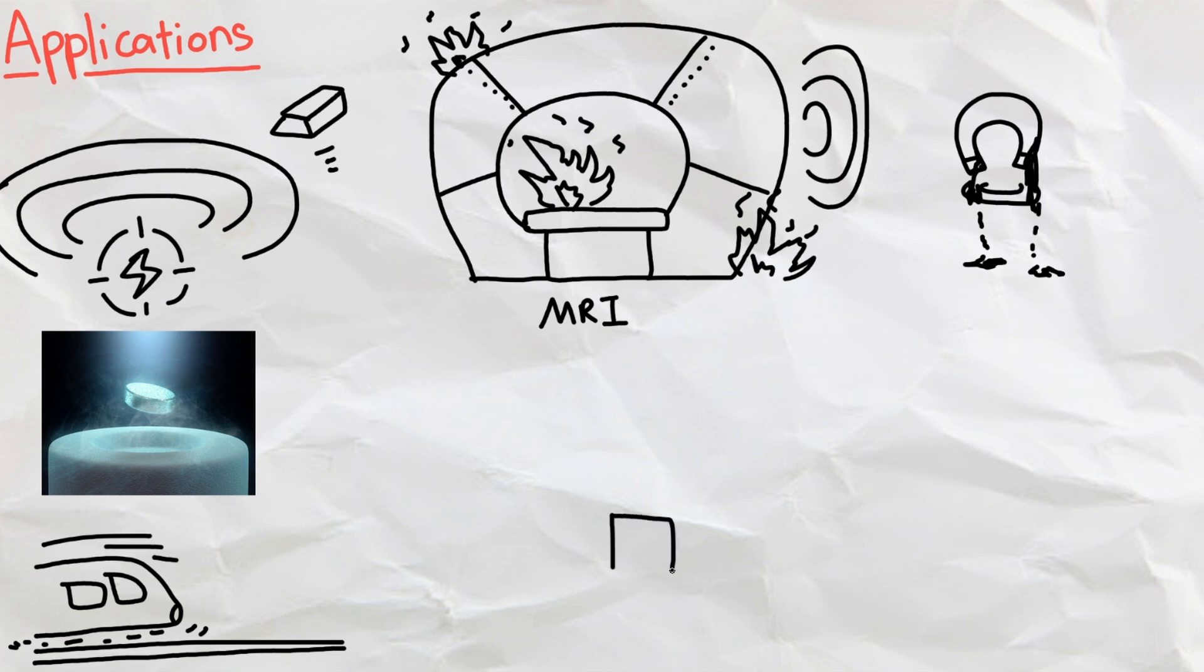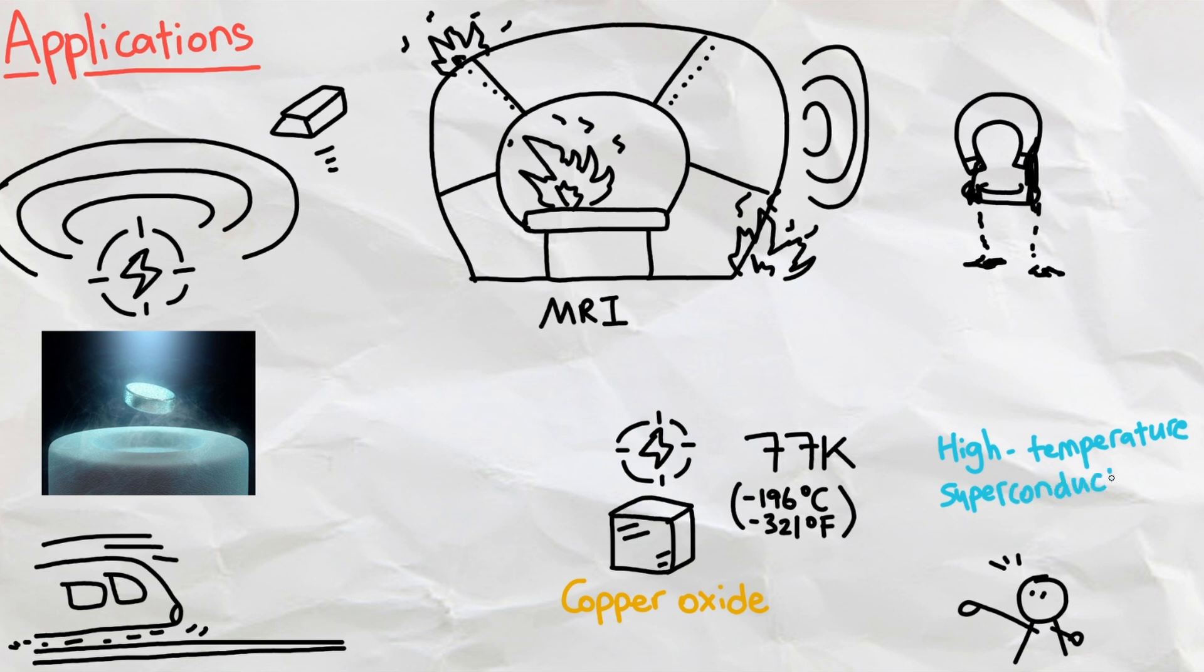Though all of this may sound impractical, since superconductors can only be made in very low temperatures, copper oxide materials have been created that exhibit superconductivity in temperatures as high as 77K, which can easily be chilled by liquid nitrogen. We call those materials the creatively named high-temperature superconductors.